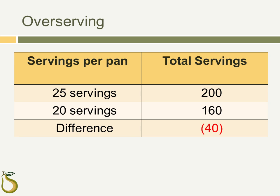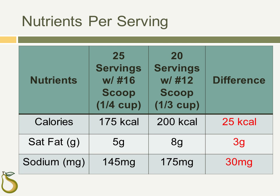Serving incorrect portion sizes can also alter the nutrient content of the menu. Comparing the nutrient content of taco meat portioned with a number 16 scoop versus a number 12 scoop, the total number of calories changes by 25 calories, saturated fat by 3 grams, and sodium by 30 milligrams. Even though these differences may seem small, it can have a big impact on the total nutrients served to participants at each meal. Imagine if a participant was overserved every day for a year — consider how many excess calories, grams of fat, saturated fat, and sodium they would be consuming. Serving healthful meals to children is the number one goal of child nutrition programs, and sponsors should strive to provide portions that are reasonable to the age/grade group of the population they are serving.